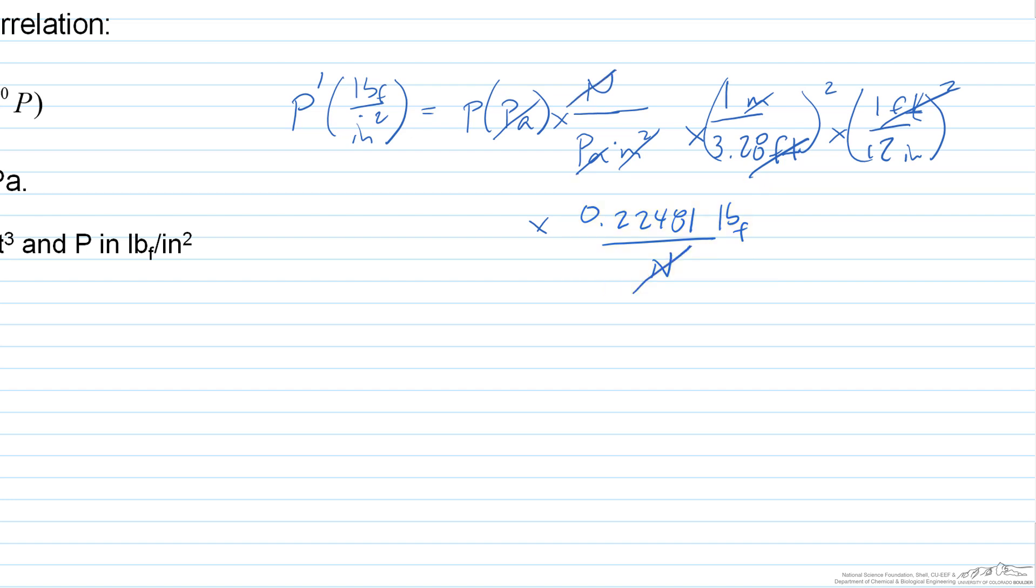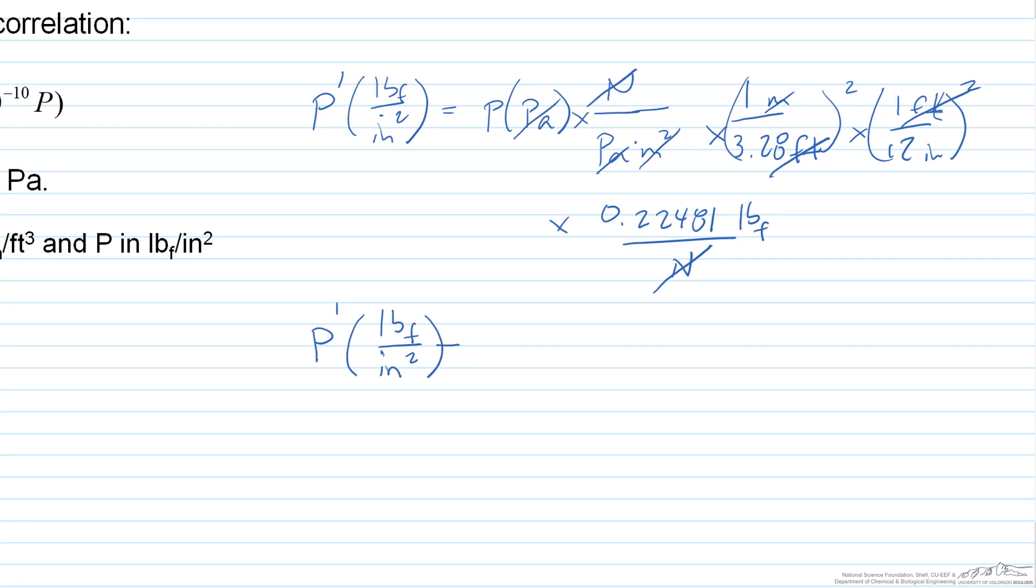I also know that 0.22481 pound force per Newton. And so that's how we cancel the Newton. So looking at this, I've got pound force in the numerator, and I've got square inches in the denominator. So I can rewrite this as our P prime, which is our new unit, because we're trying to calculate, we're trying to convert this correlation such that we can use pressure in pound force per square inch. When we do all the math, so when I plug in all of those values here, if I do the math here, I end up with P prime is equal to 1.45 times 10 to the negative fourth times our pressure in pascals. Alternatively, I can rearrange this such that P in pascals is equal to 68.95 times the pressure in psi.